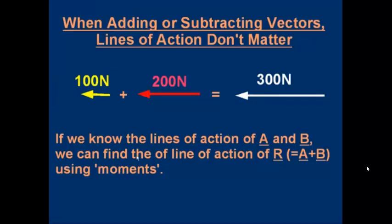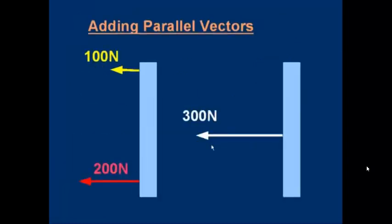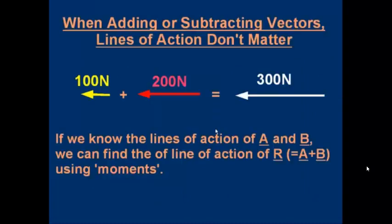However, if we know the lines of action of A and B, we can find the line of action of the resultant. The way we do that is by using moments — that's not part of the current topic so we're not going to be talking about it. But if I wanted to know where the line of action of the resultant is — near the top, middle, or bottom — there is a way to work it out using moments. For all calculations on addition and subtraction, the lines of action are just not relevant.